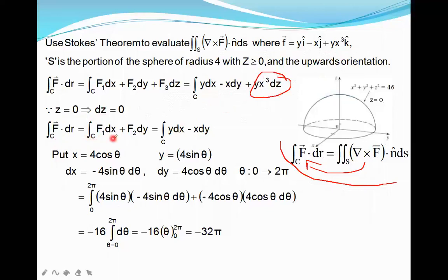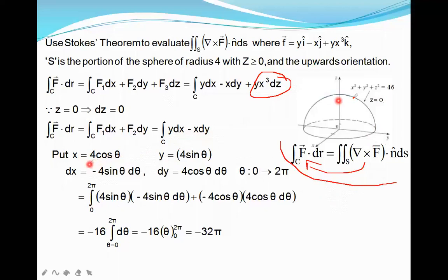With f1 equal to y and f2 equal to minus x, we have the integral of y dx minus x dy. We now calculate this by converting to parametric form. We substitute x equal to a cos theta and y equal to a sin theta, where a is the radius of the circle. For this problem the radius is 4, so we put x equal to 4 cos theta and y equal to 4 sin theta.